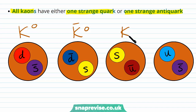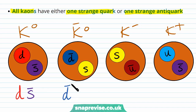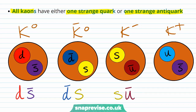The negative kaon and the positive kaon also have distinct quark compositions. The neutral kaon is down and anti-strange; its antiparticle is anti-down and strange. The negative kaon is strange and anti-up, and the positive kaon is up and anti-strange. So those are all of their quark compositions.